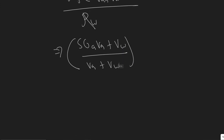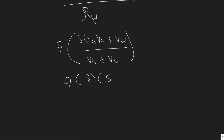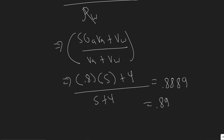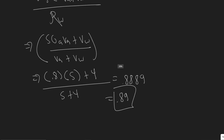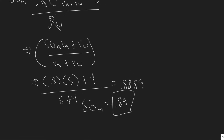We know all these values, so it's just a matter of plugging in. SG_A is 0.8, the volume of the antifreeze solution is 5 liters, and the volume of the water is 4 liters. So: (0.8 × 5 + 4) / (5 + 4) = (4 + 4) / 9 = 8/9 ≈ 0.8889, which rounds to 0.89. There are no units for specific gravity, so the answer is SGM = 0.89.